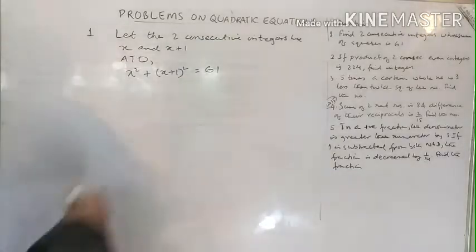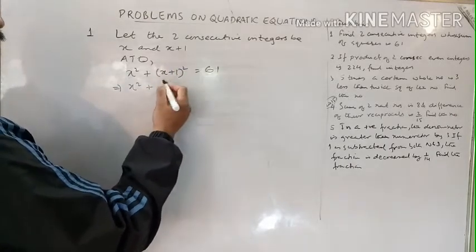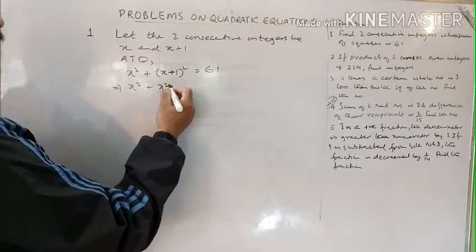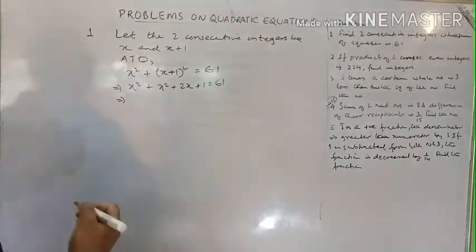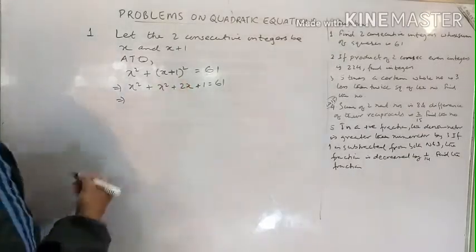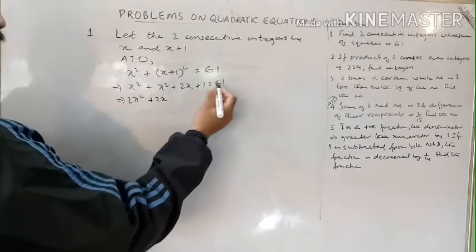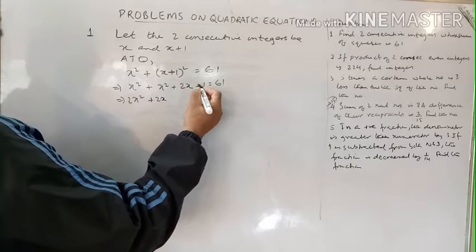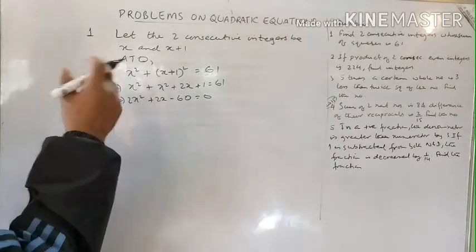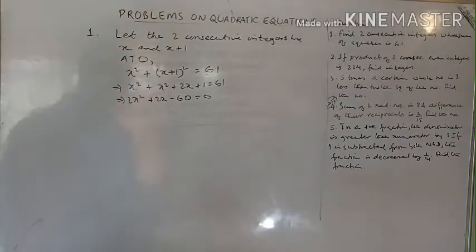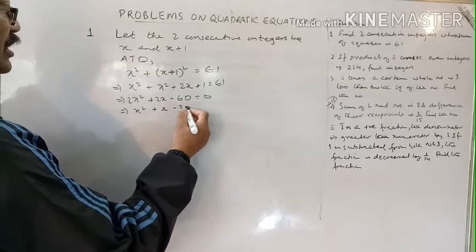Expanding: x squared plus x squared plus 2x plus 1 equals 61. Combining like terms: 2x squared plus 2x plus 1 minus 61 equals 0, giving 2x squared plus 2x minus 60 equals 0. Dividing throughout by 2: x squared plus x minus 30 equals 0.